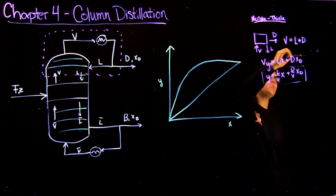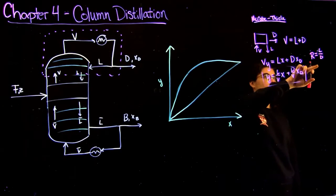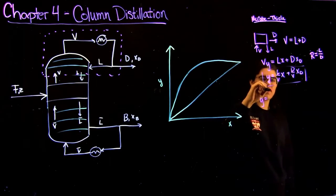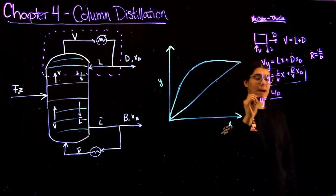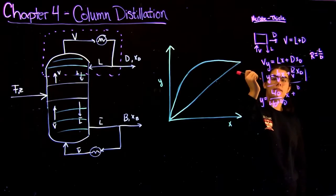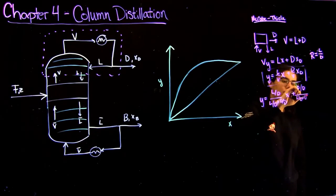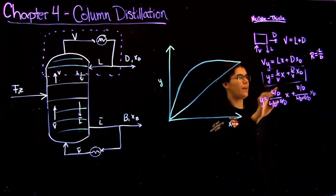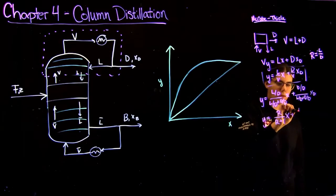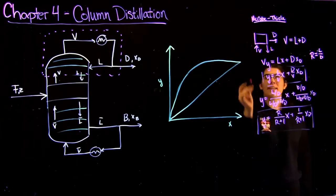We can rewrite the top operating line in different ways. If we're given the reflux ratio R equals L over D, we can rewrite using V equals L plus D and R equals L over D. Dividing everything by D, and substituting, we get: y equals R/(R+1) times x plus 1/(R+1) times XD. This is another form of the exact same equation.